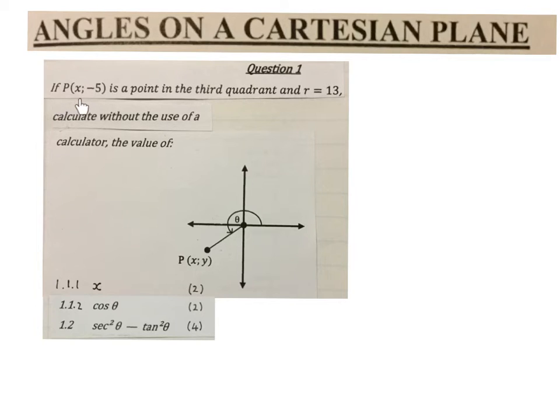It says, if P(x, -5) is a point in the third quadrant and r is 13, calculate without the use of a calculator the value of x, cos θ, and sec²θ - tan²θ.